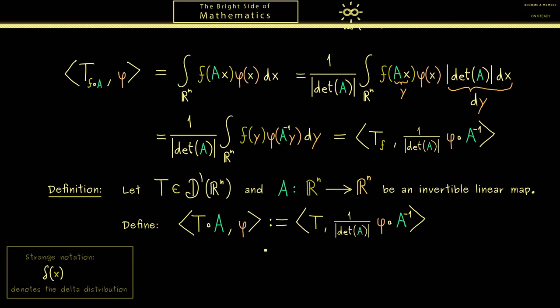Therefore I would say if you know that this is a sloppy notation, you are allowed to use it. In particular, here we could write T of Ax, and then of course we apply this to the test function phi. Okay, and then the formula from above tells you that this is T applied to the test function here where we put in A inverse x.